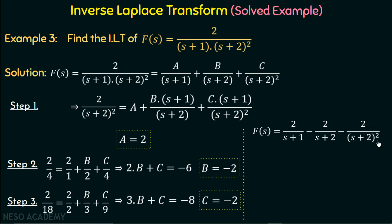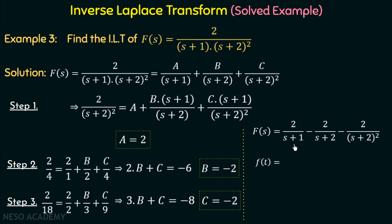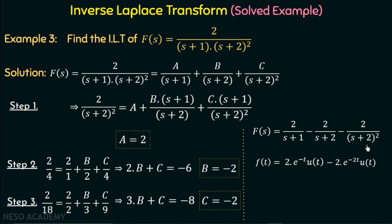Now we can apply the inverse Laplace transform on f(s) because we know the inverse Laplace transforms of these three factors. So f(t) equals the inverse Laplace transform of each of the three terms. The inverse Laplace transform of 2/(s+1) is 2·e^(−t)·u(t). The inverse Laplace transform of 2/(s+2) is 2·e^(−2t)·u(t). Now we need to calculate the inverse Laplace transform of 2/(s+2) whole squared, which we can calculate using the frequency shifting property.